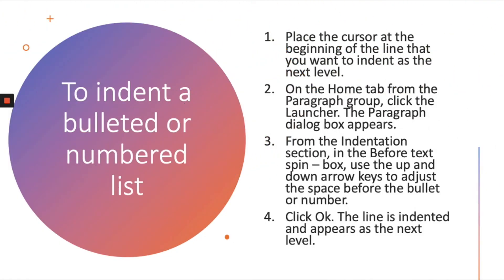To indent a bulleted or numbered list, place the cursor at the beginning of the line you want to indent as the next level. On the Home tab, from the Paragraph group, click the launcher. The Paragraph dialog box appears. From the Indentation section, use the Before Text spin box and click the up and down arrows to increase or decrease the indentation value. Click OK. The line is indented and appears as the next level.